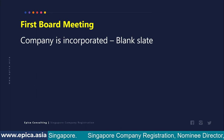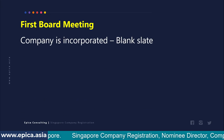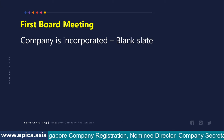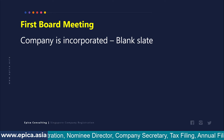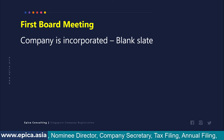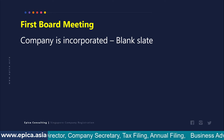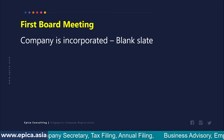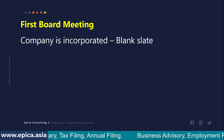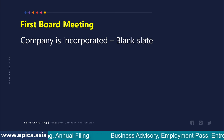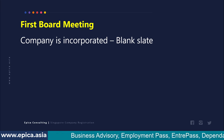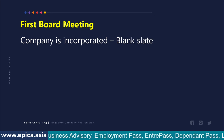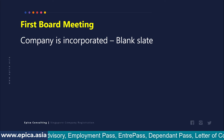When you incorporate a company and register it with ACRA, at that point of time the company comes into existence. The UEN number is assigned and the company is incorporated at the point of time when it is registered with ACRA. At that point of time it is like a blank slate — nothing is known about this company other than the details lodged with ACRA.